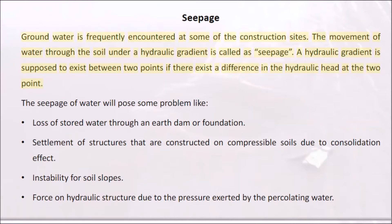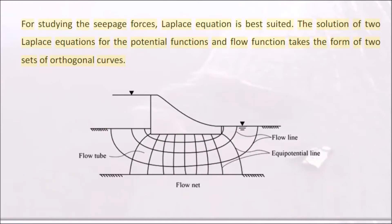Groundwater seepage is frequently encountered at construction sites. The movement of water through the soil under a hydraulic gradient is called seepage. A hydraulic gradient exists between two points if there is a difference in the hydraulic head at those points. Seepage poses problems such as loss of stored water through an earth dam, foundation settlement of structures on compressible soils due to consolidation, instability of soil slopes, and forces on hydraulic structures due to pressure exerted by percolating water.